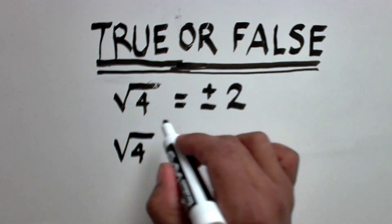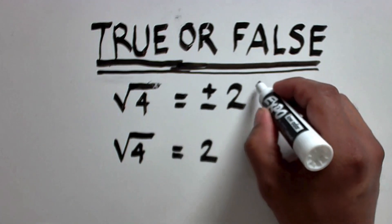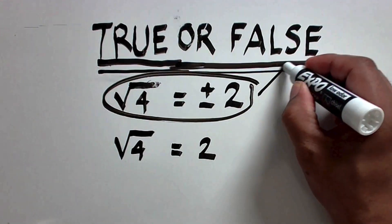Therefore, the square root of 4 is not equal to plus or minus 2. This is false.